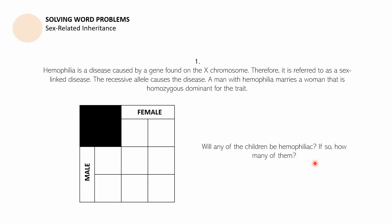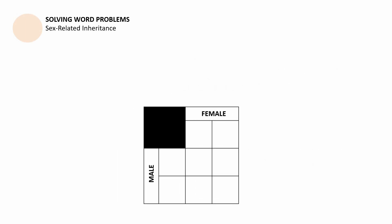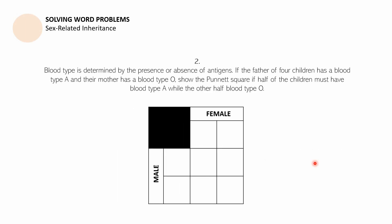If you need more time to figure out an answer, you may pause this video. Number two: blood type is determined by the presence or absence of antigens. If the father of four children has blood type A and their mother has blood type O, show the Punnett square if half of the children must have blood type A while the other half blood type O. Put your answers in the Punnett square. You may pause this video to have more time in answering it.